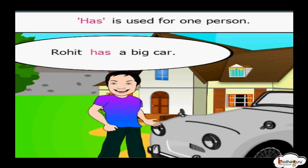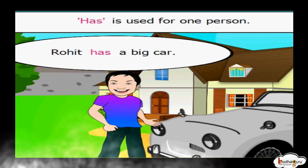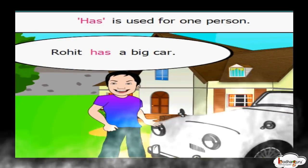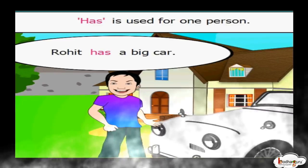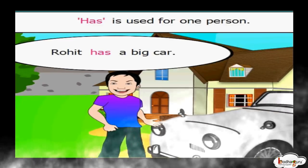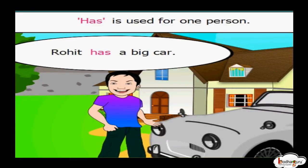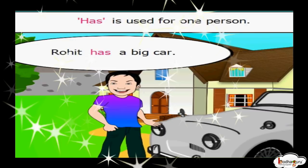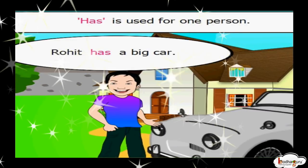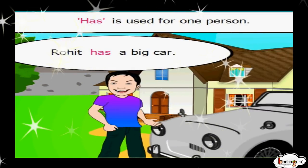Rohit has a big car. The meaning of 'has' and 'have' is the same. 'Has' is used for one person, animal, place or object, but 'has' is not used with 'I' and 'you'. Rohit is the name of a person, so we use 'has' to talk about his possession.